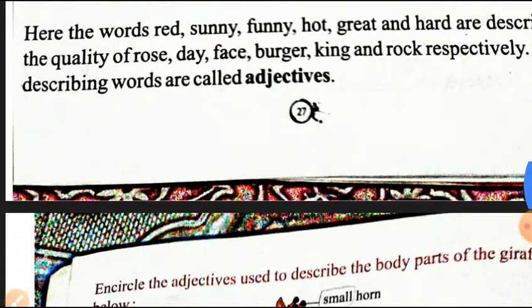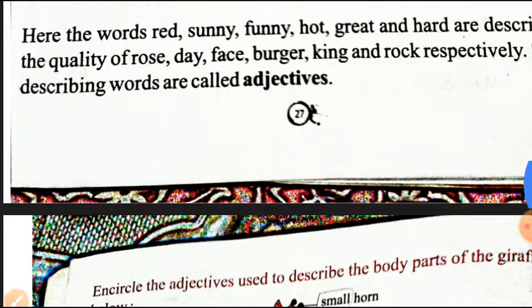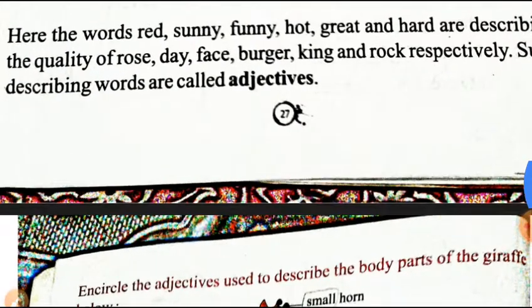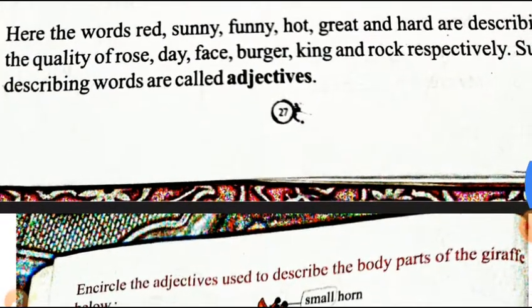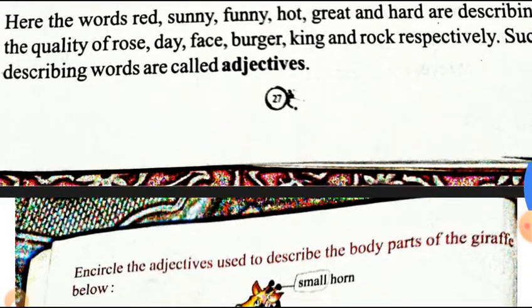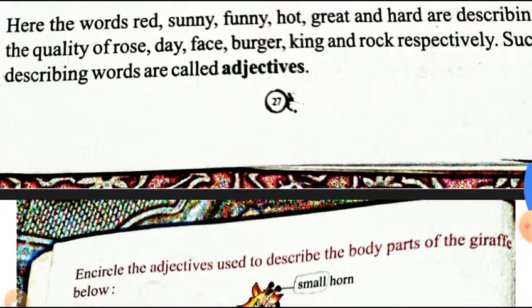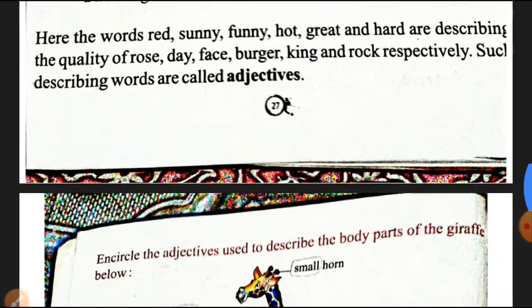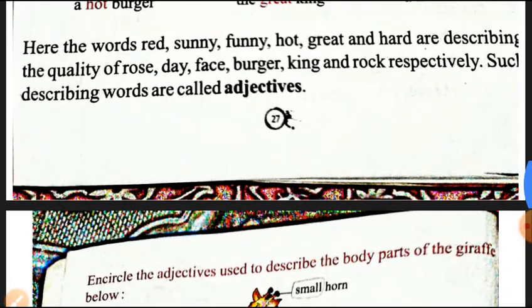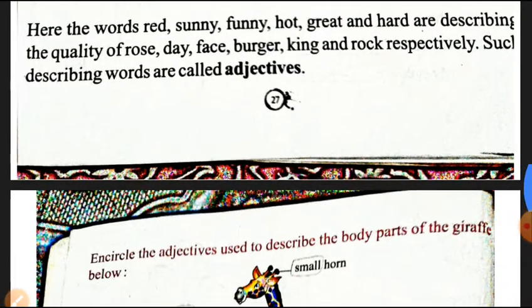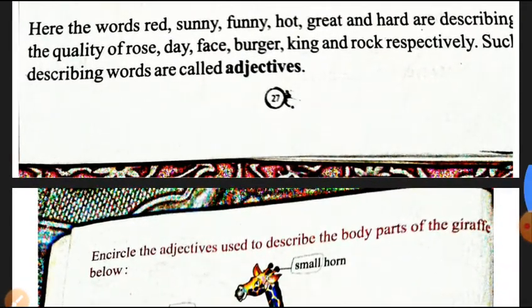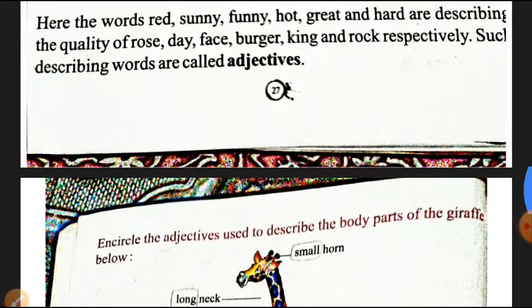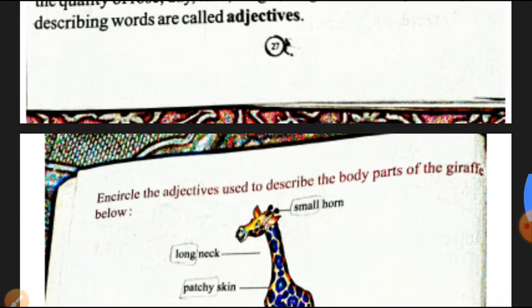So the words red, sunny, funny, hot, great, and hard are describing the quality of the rose, day, face, burger, king, and rock. How is the rose? It is red. How is the day? It is a sunny day. How is the face? Funny. How is the burger? Hot. How is the king? Great. How is the rock? Hard. These describing words we call adjectives.